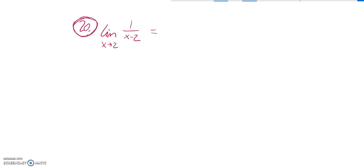Notice if I try and just plug it in, 1 over 2 minus 2, I end up with 1 over 0, which I can't evaluate. I can't factor it either to try and cancel something out, so we just have to think about this.